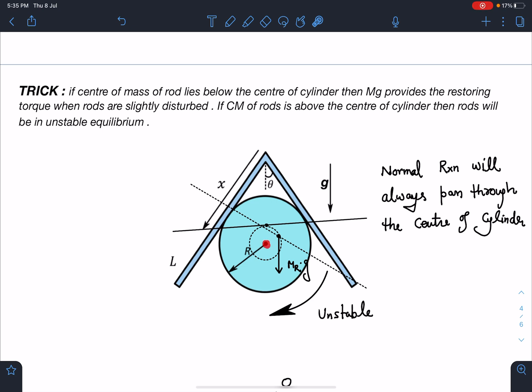You can see this mg, point of action, point of application of this mg, combined mg, that is total mass of the rod into g. If mass of one rod is m, I can write 2mg. That will pass through this point and it will just rotate this system of these two rods and it will be in unstable equilibrium.